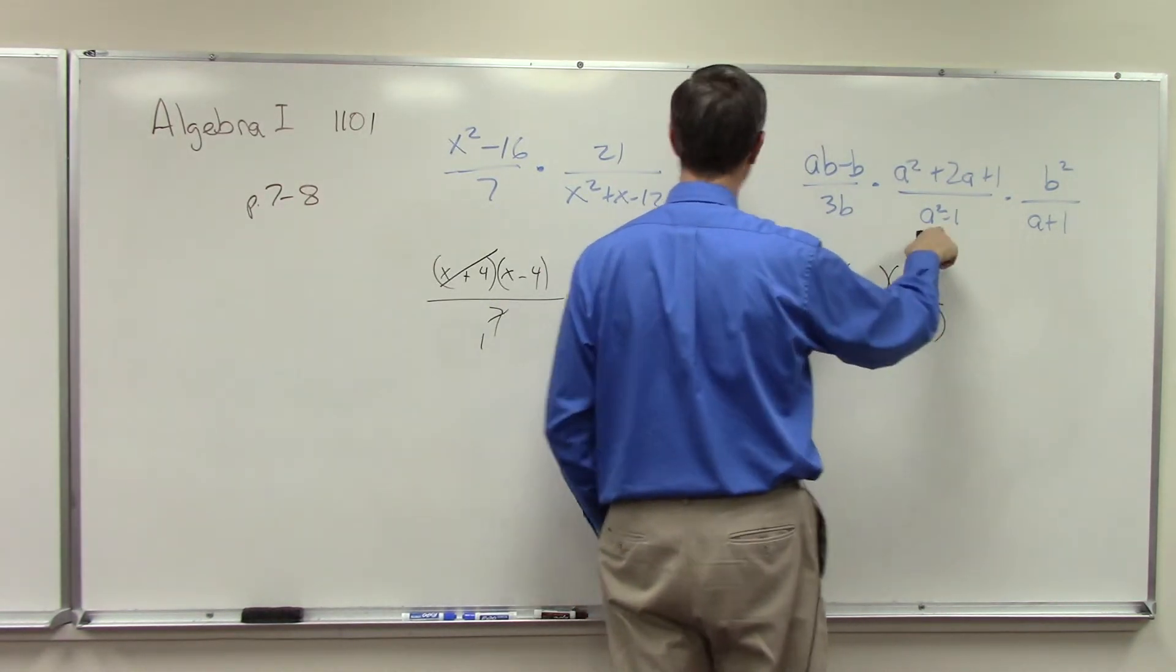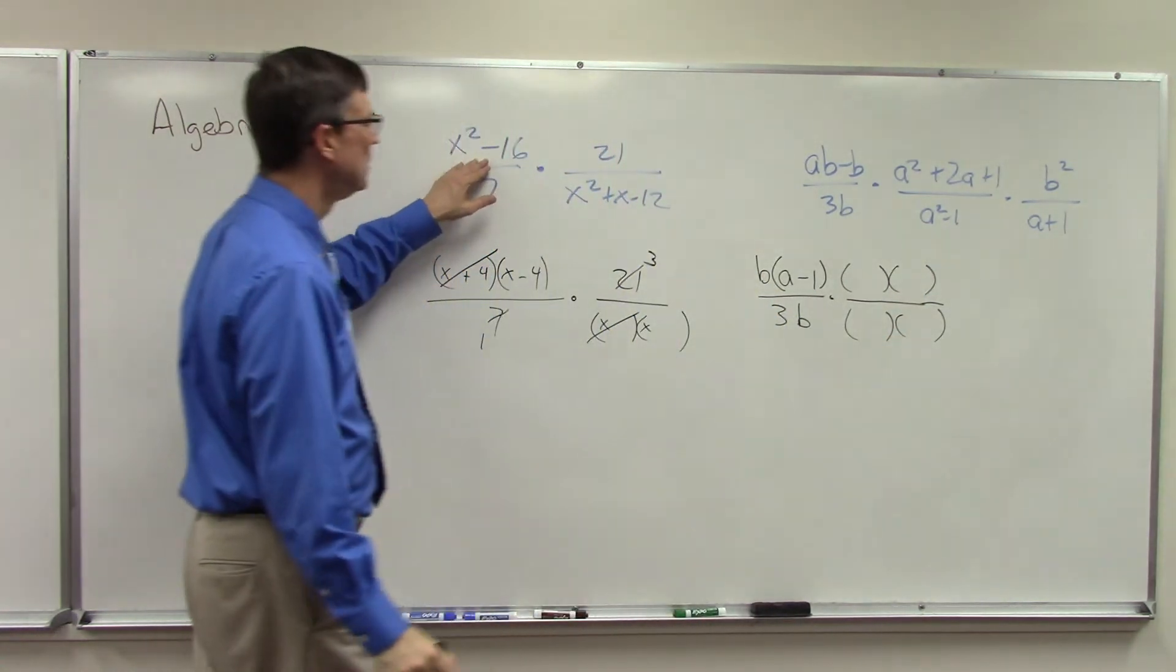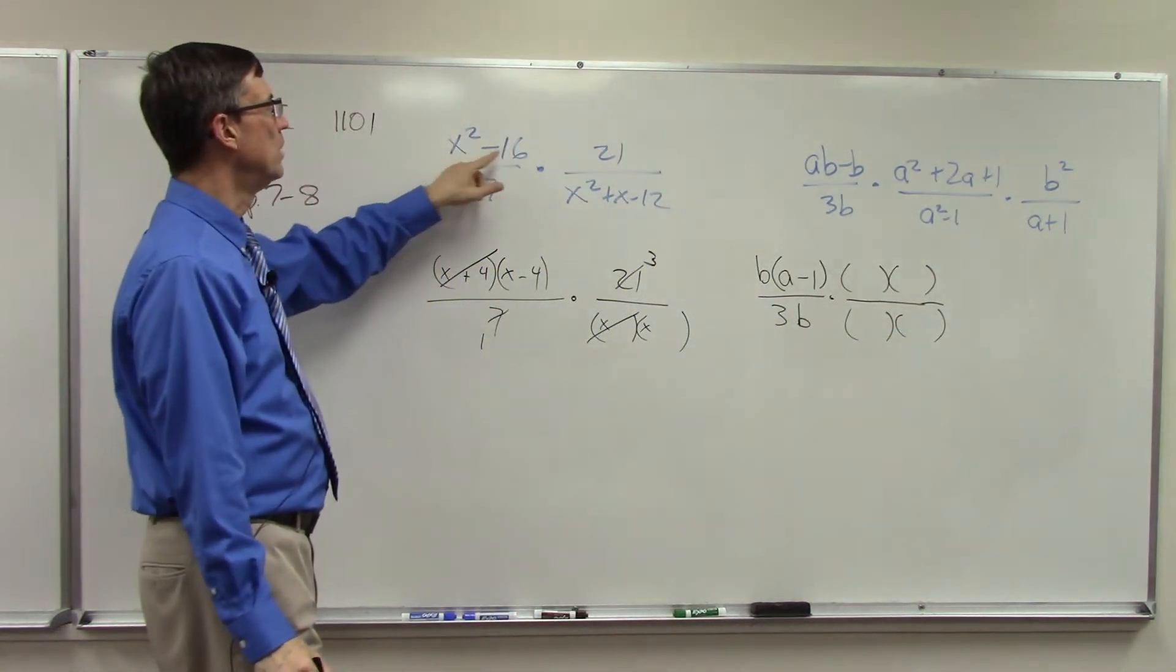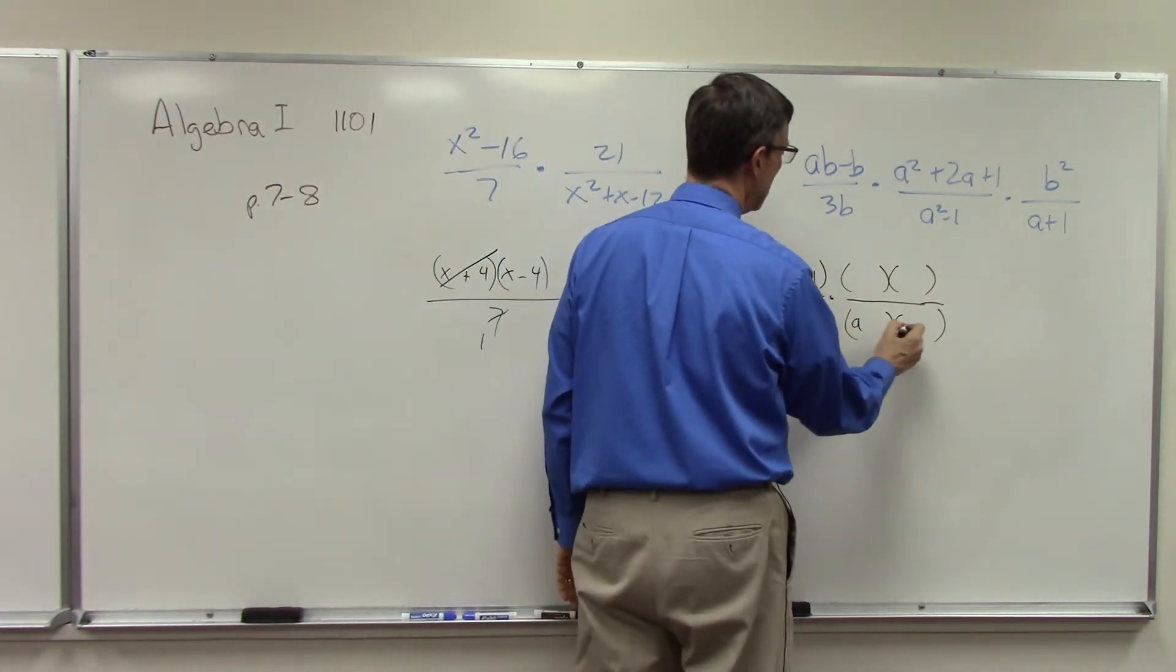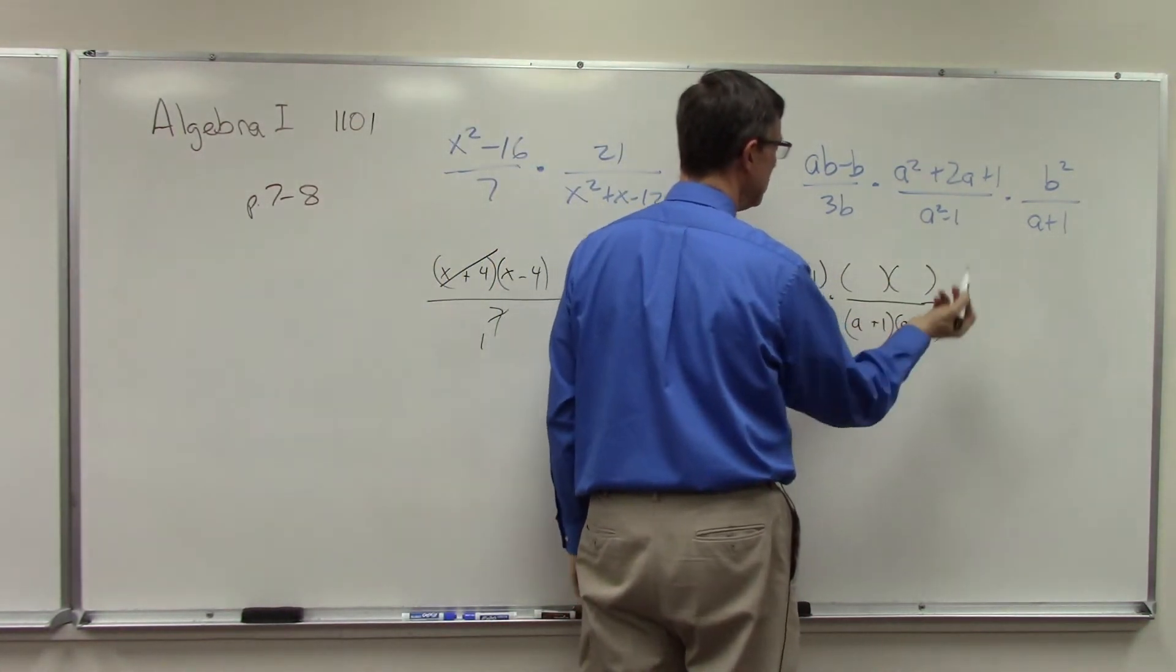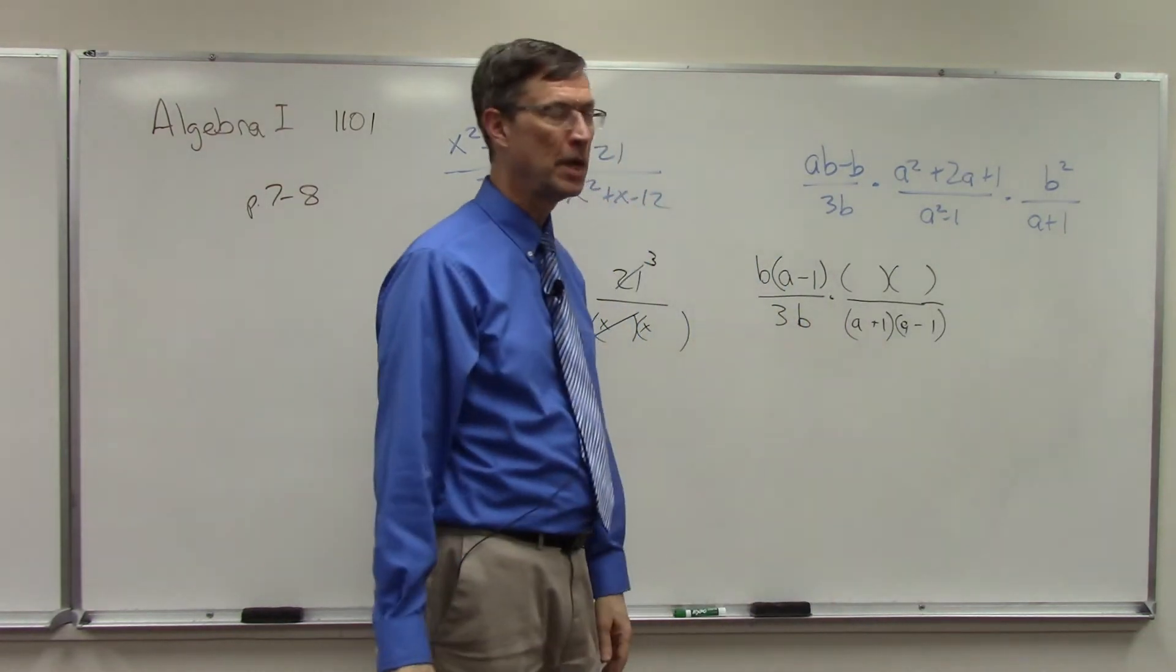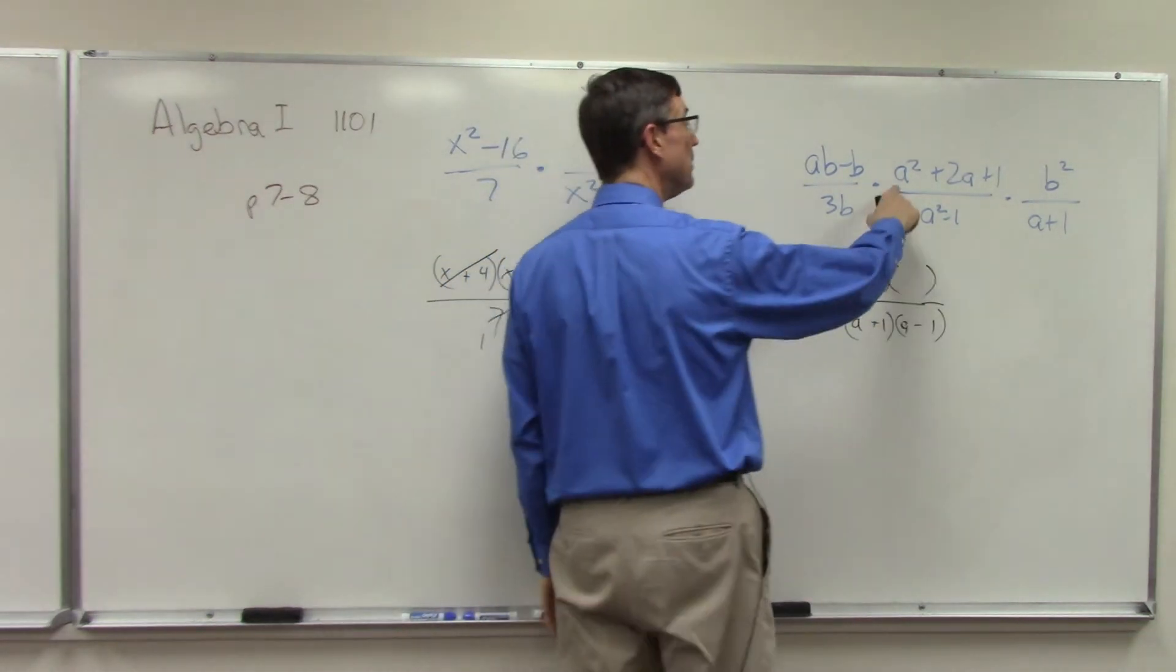Okay, and then here I can factor this to be two parentheses. This I can factor to be two parentheses. And again, this is like this one, the difference of perfect squares, so I can do A, A, 1, 1. One's positive, one's negative. All right, piece of cake.